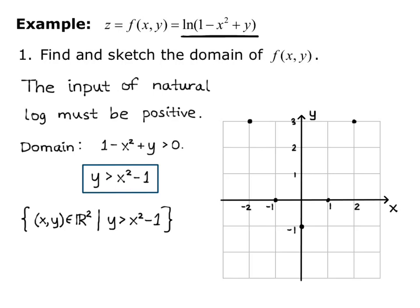Because my domain has a strict inequality, we have to draw the parabola with a dotted line. Since y is greater than the parabola, we shade above or inside of the parabola.